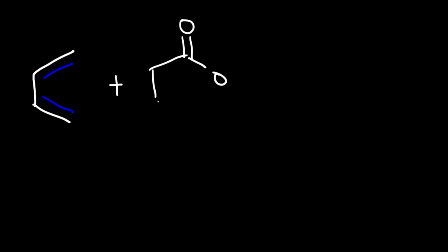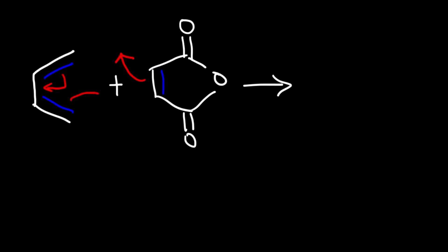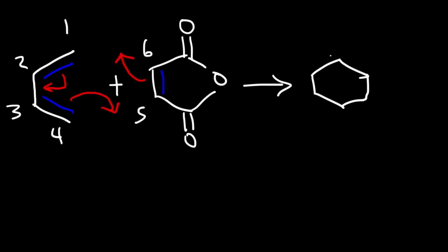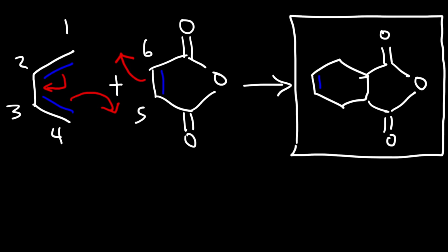Now let's try another example. We have 1,3-butadiene in its S-cis conformation and we react it with a molecule containing carbonyl groups. Go ahead and pause the video and predict the major product. The mechanism is the same, giving carbons one through six in a six-membered ring. Attached to carbon six we have a carbonyl group connected to an oxygen, and on carbon five we also have a carbonyl group. As always there is a double bond between carbons two and three. This is the product for this Diels-Alder reaction.